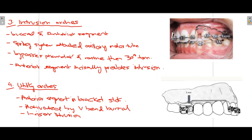The third fixed appliance is intrusion arches. It has two segments: a buccal segment and an anterior segment, functioning as a spring system. The appliance is inserted into the auxiliary tube of the molar tube, bypasses the premolars and canines, then makes a turn in the anterior direction. This applies an intrusive force to intrude the incisors — used when molars are at their normal height but incisors have over-erupted.